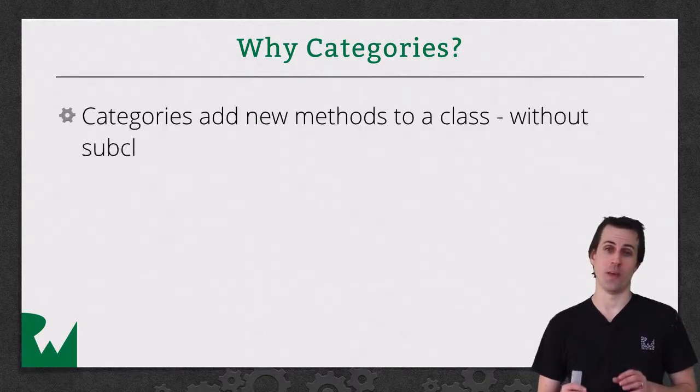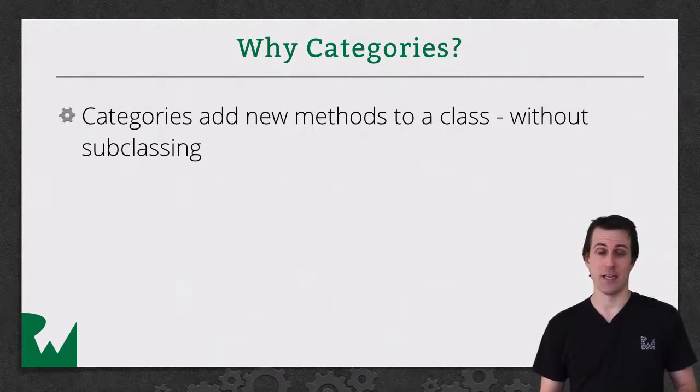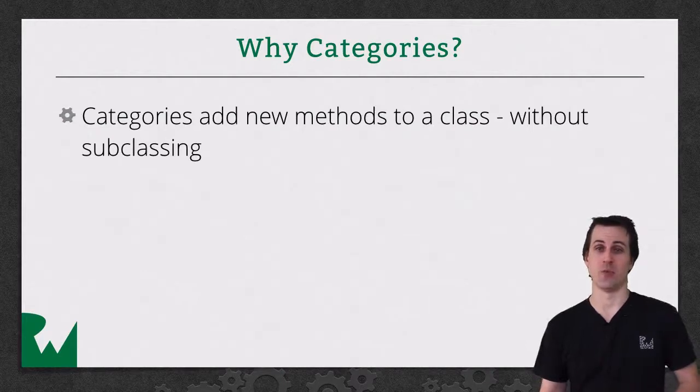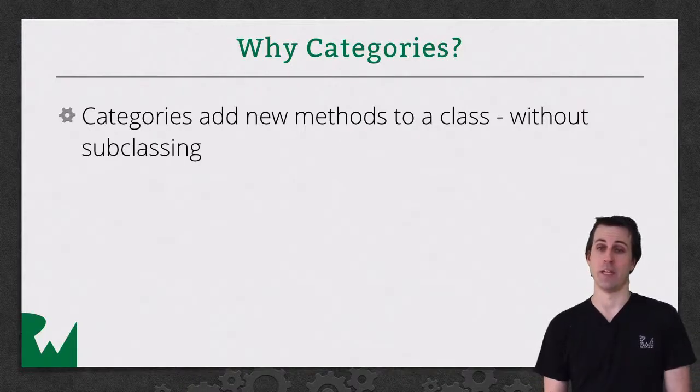Categories allow you to add a new method to every instance of a particular class without subclassing it, without changing the type of the class. You just use the NSString as usual, and all of a sudden it has a new method. It's really handy to make your code nice and clean. You'll see it used very commonly in Objective-C development.